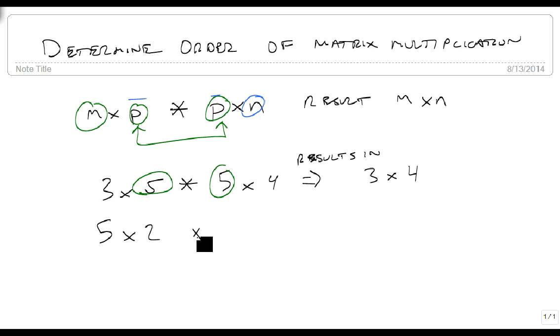And if I have a 5 by 2 times a 2 by 1, this is going to become, again, the 2's match, so this ends up as a 5 by 1 matrix.